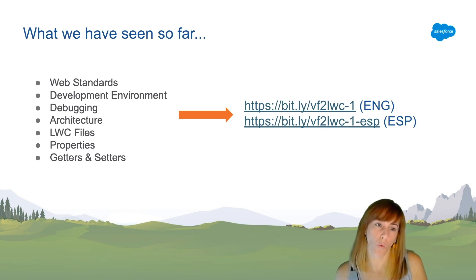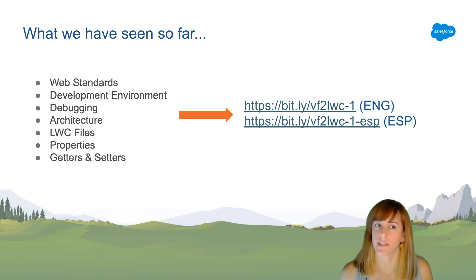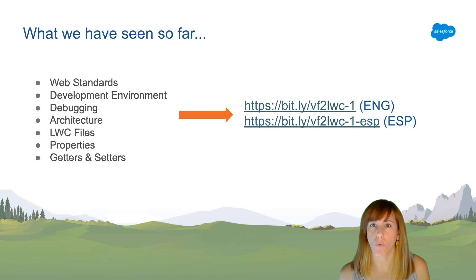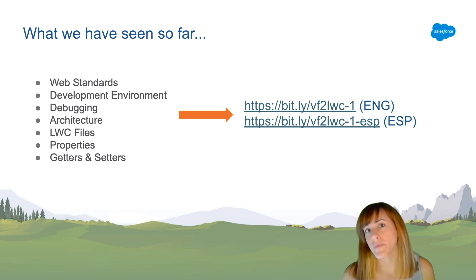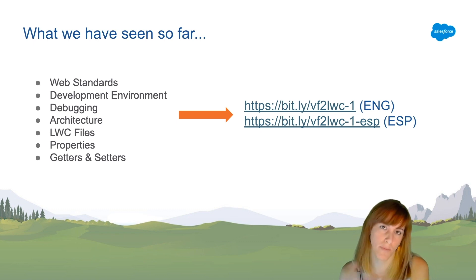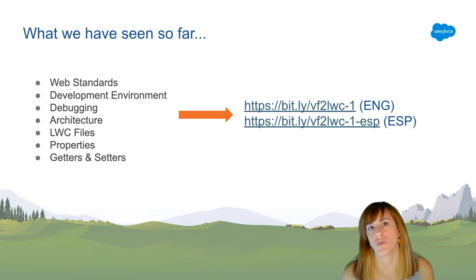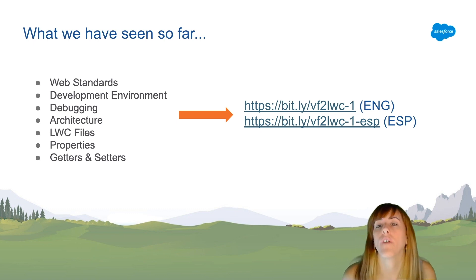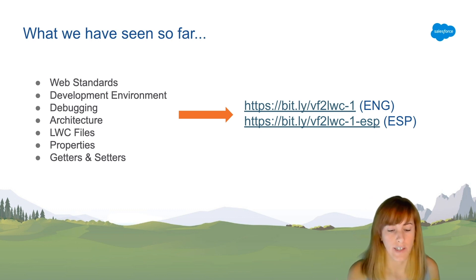We saw the differences in architecture from Visualforce to Lightning Web Components. LWC is a client-side framework that uses JavaScript, where everything including re-rendering happens client-side, while Visualforce is a server-side templated language. We also saw how to create a Lightning Web Component, its different files, the concept of properties similar to Apex properties, and how to declare them using a getter and setter.